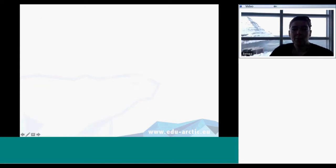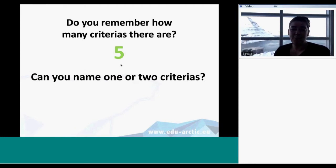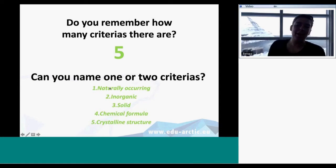We'll go a little bit further just to see if any of your students are awake. Do they remember how many criteria there are? If you have an answer, you can write it in the chat. Yes, there are exactly five criteria. And maybe you could also name one or two criteria. These are the five: naturally occurring, inorganic, solid, has to have a chemical formula, and a crystalline structure. Very good.